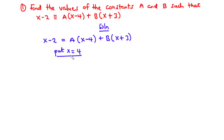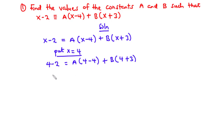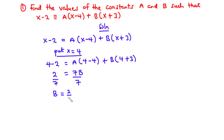Substituting x = 4: 4 − 2 = a(4 − 4) + b(4 + 3). That gives 2 = 0 + 7b. Dividing through by 7, we have b = 2/7. So this is the value of b.